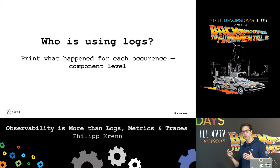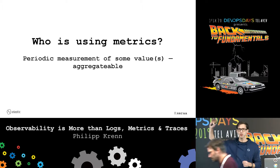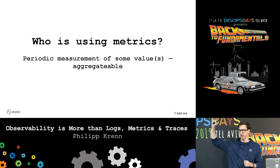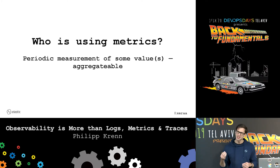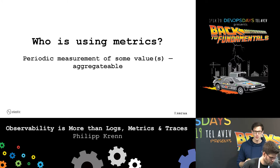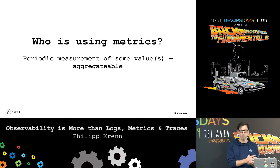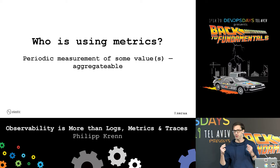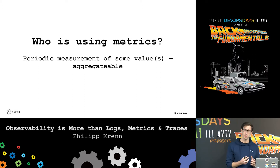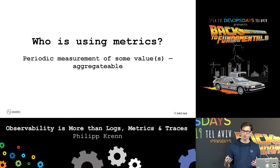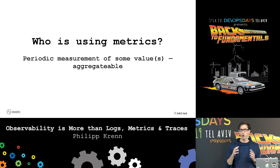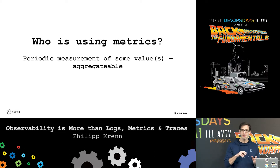The next thing that many people probably have are metrics. Who is collecting metrics for an application? Basically, this is a periodic thing — you collect one or multiple values at multiple points in time. The nice thing about them is you can aggregate them together later on, and they're pretty cheap to collect, whereas logs can be pretty verbose. Metrics can be very compact. The thing is, they lack a lot of context, and you don't see the overall picture. Depending on how you see your data, you might miss outliers.